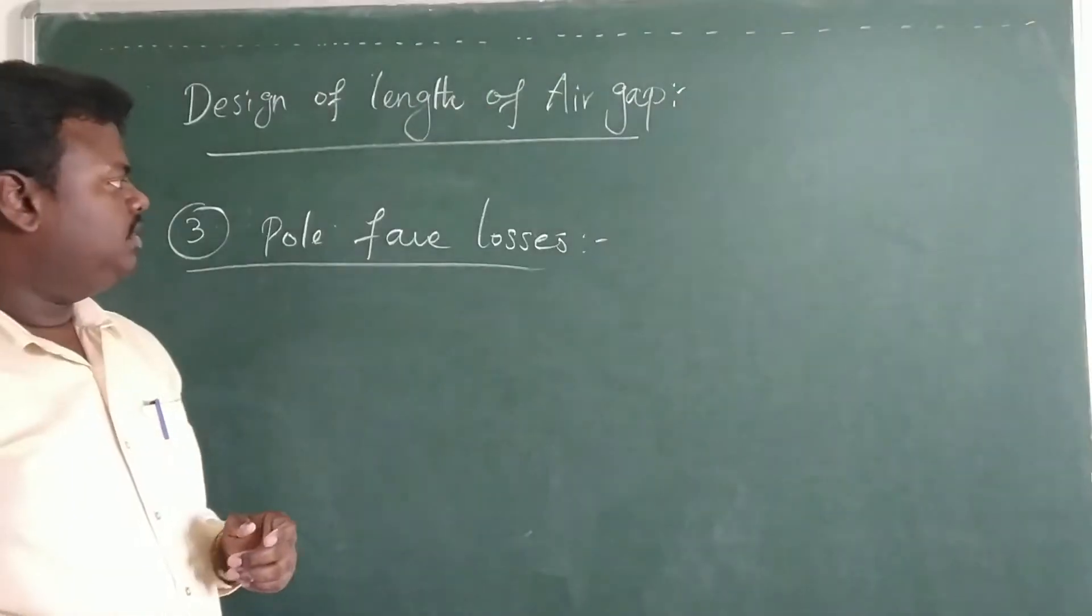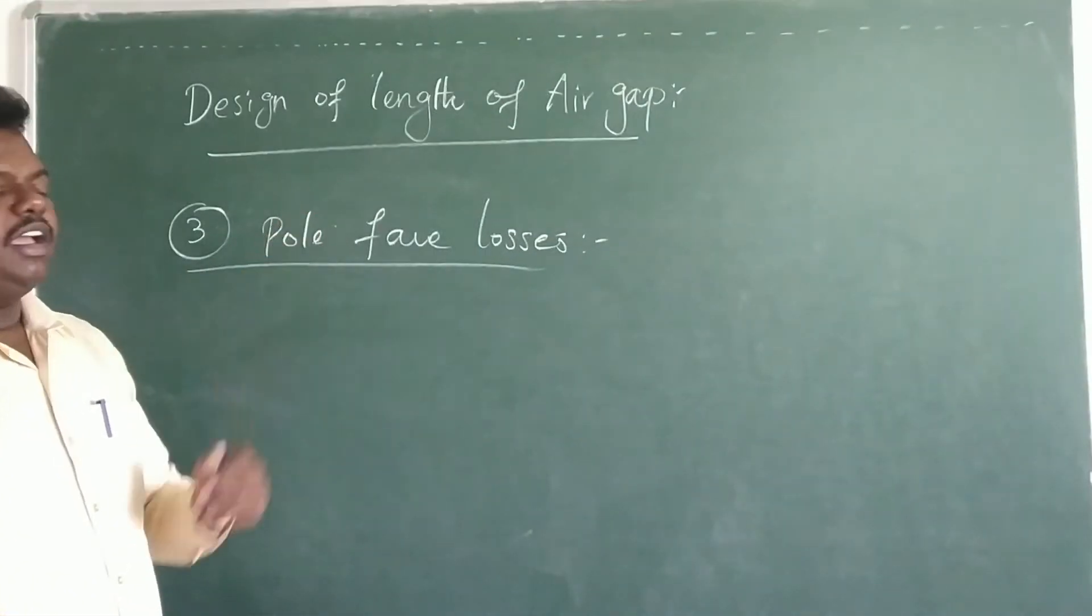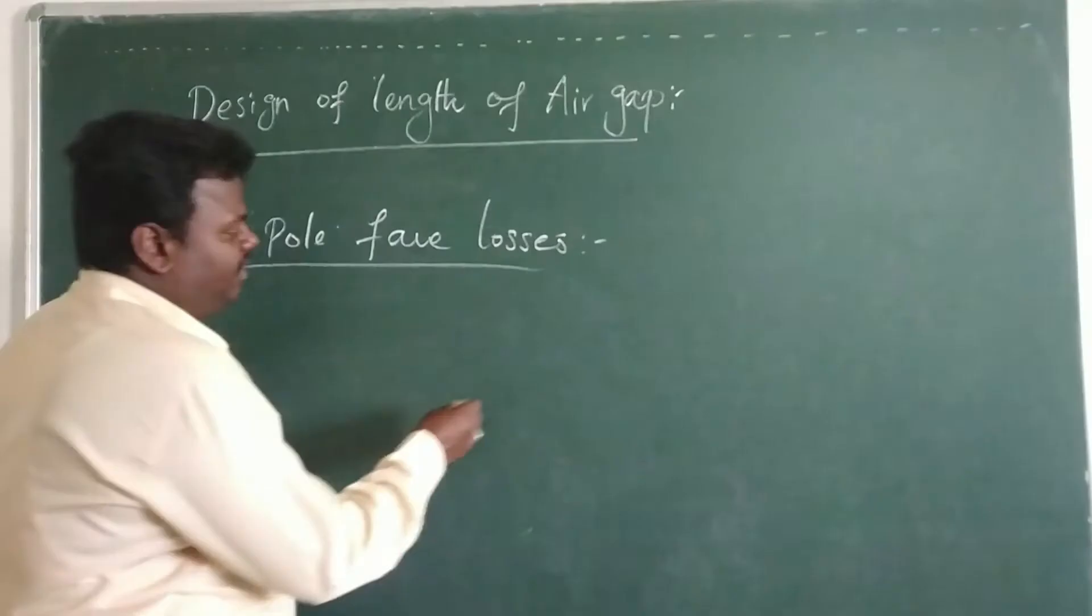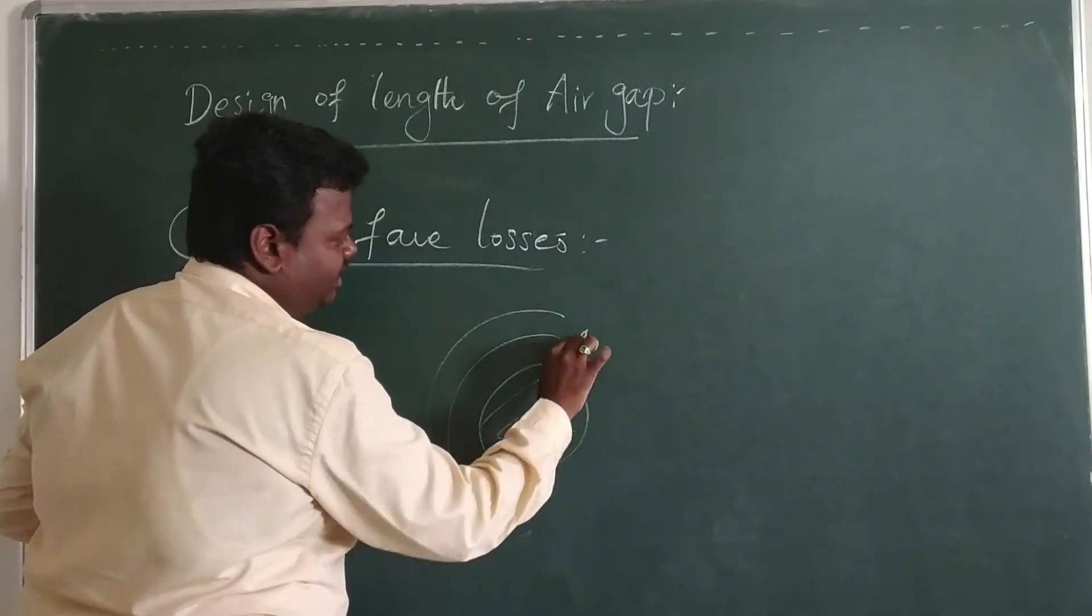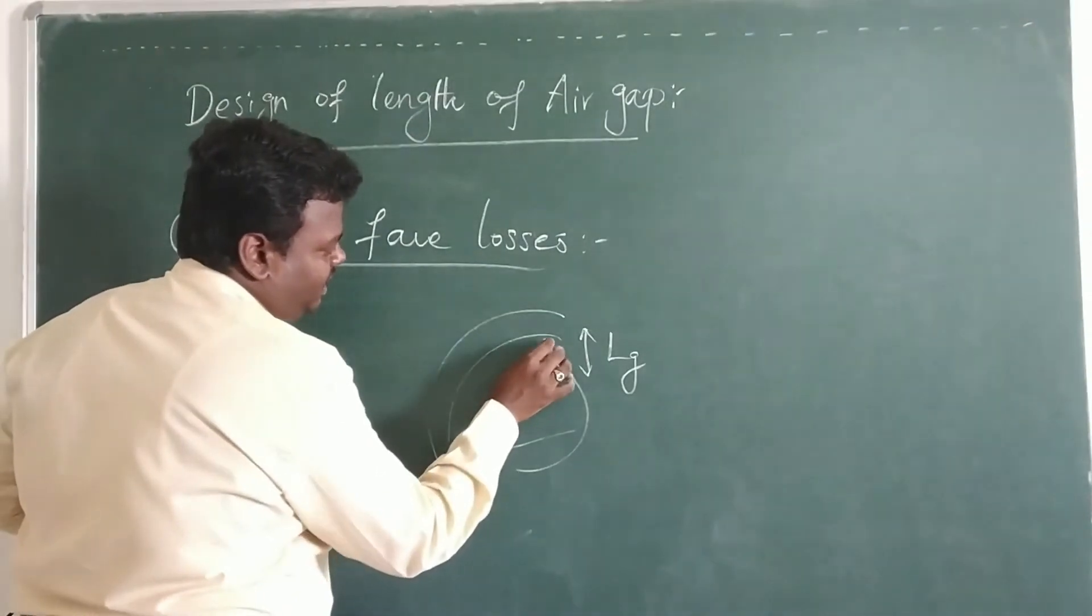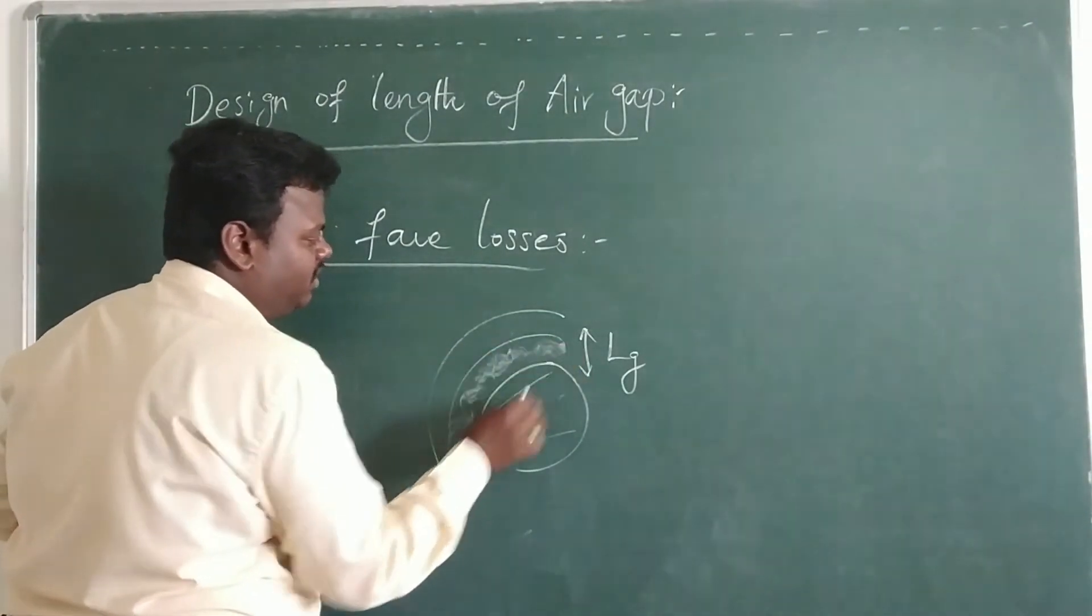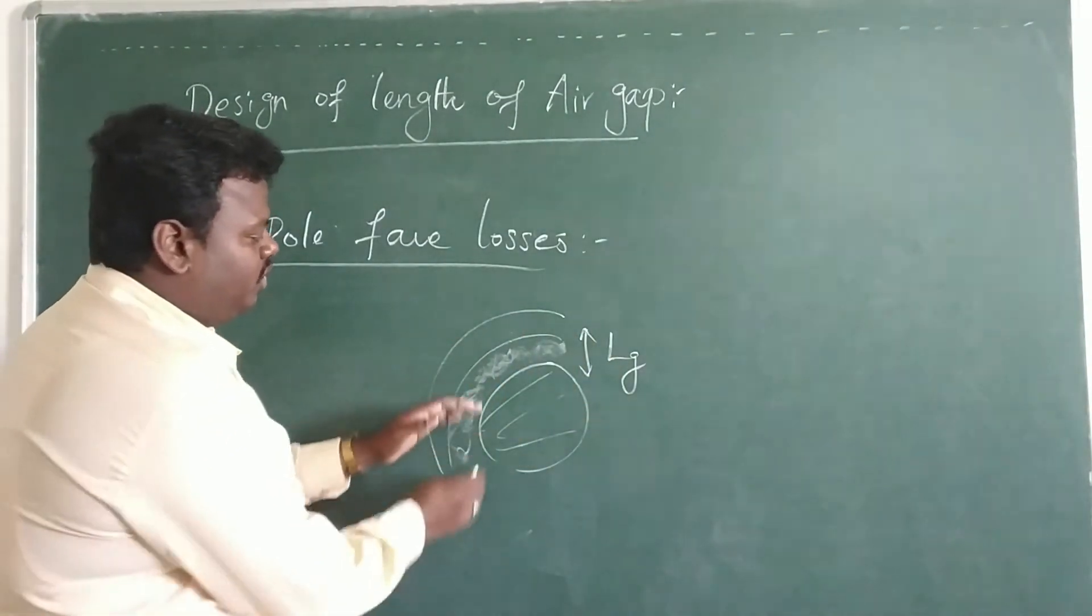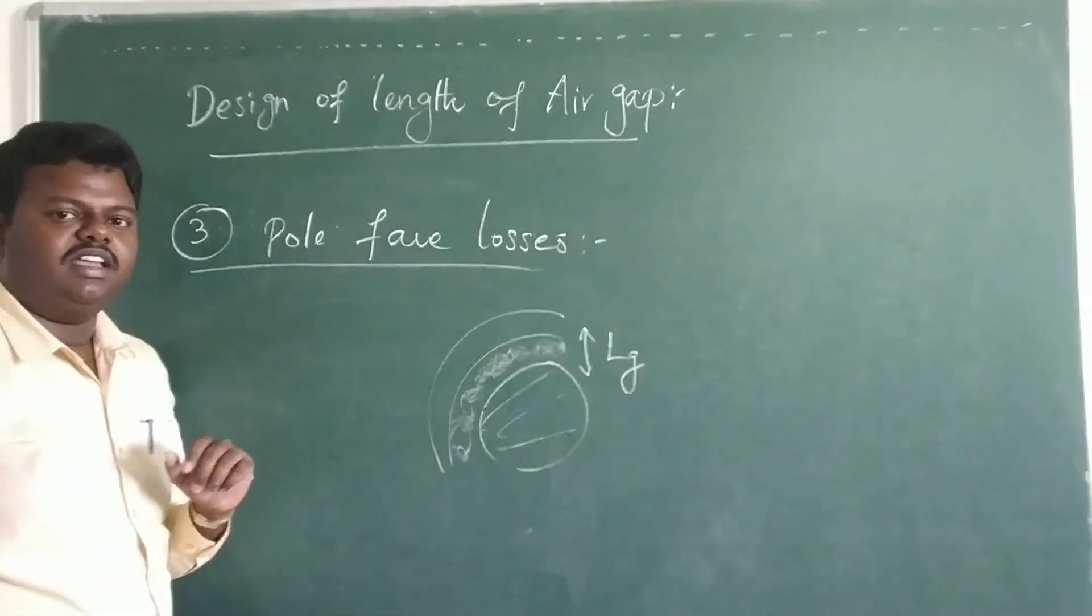The third parameter which disturbs the air gap length design is pulsation losses. Whenever we keep the air gap length larger, what actually happens, the flux density present in this particular air gap will reduce, due to the large amount of this air gap length. So due to this, the pulsation loss in the particular core will get reduced.